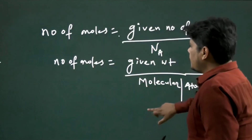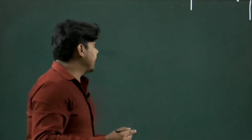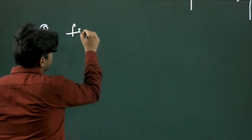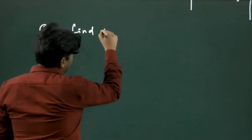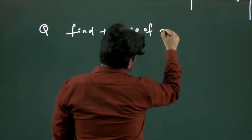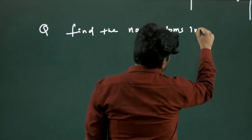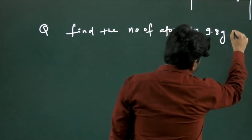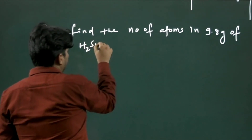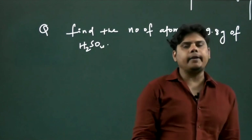Now we have some numericals to solve. The first question is: find the number of atoms in 9.8 grams of H₂SO₄. This is our first question.